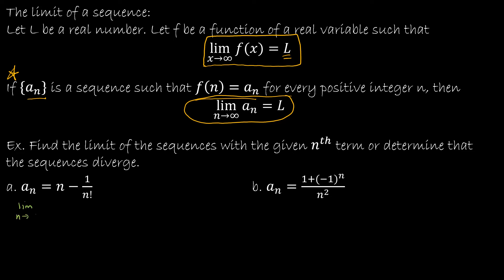So I'm going to find the limit as n approaches infinity of n minus 1 over n factorial. Again, you could find the first several terms of the sequence: if I plugged in 1, I would get 1 minus 1 over 1, which would be 0. And if I plugged in 2, I would get 2 minus 1 over 2 factorial, so 2 minus 1 half, or 3 halves. I could continue finding values to see if there's a pattern — but instead, let's use our math brains and think about this analytically.